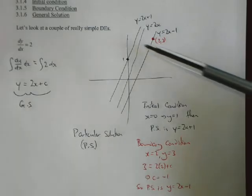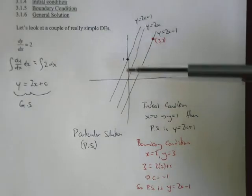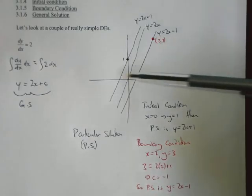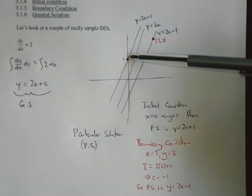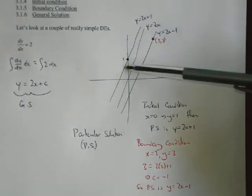So a general solution is a whole family of curves which follow the same shape, in this case a straight line. And then an initial condition on the starting point of the x-axis defines a particular curve.